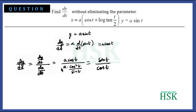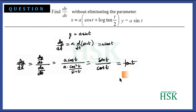Here a cancels out, sin t goes to the numerator, and one cos t cancels, leaving sin t / cos t = tan t. So dy/dx = tan t, which is the required answer.